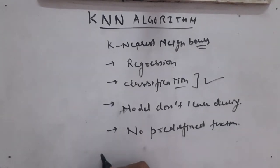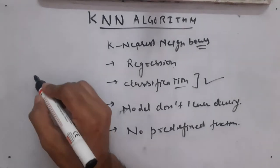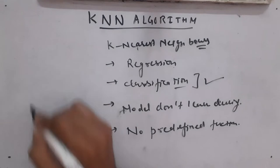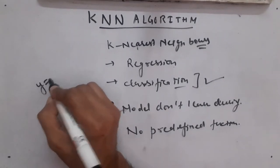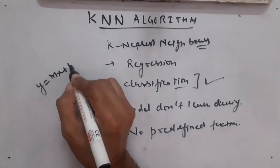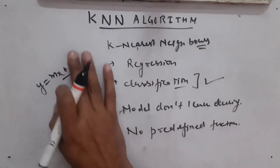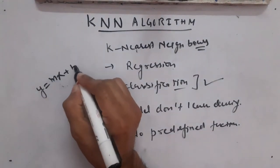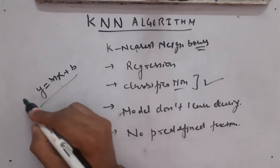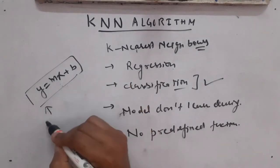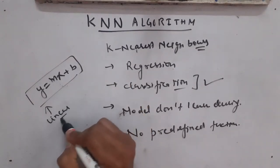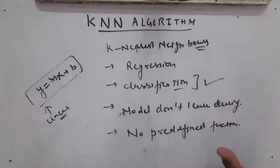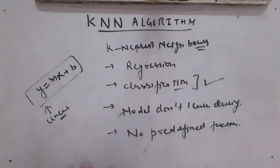There is no predefined mapping function. For example, in linear regression we used to have y = mx + b — that was the mapping function. But in this KNN algorithm we do not have any such mathematical function. Let me show you how it actually works.